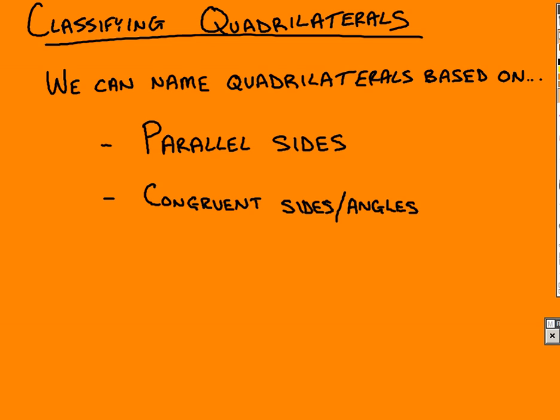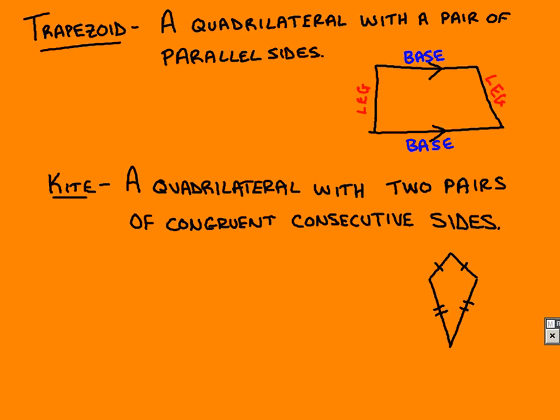Alright, we are looking at how to classify quadrilaterals today, and the main thing that we're going to look at here is where we have parallel sides, possibly, or where we have sides that are congruent, or angles that are congruent. So, every four-sided shape is a quadrilateral, but we can make it a little more specific for some.